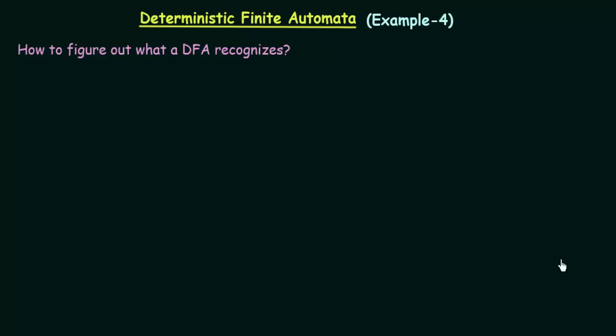Hello everyone. Welcome to the next lecture in Theory of Computation. In this lecture we will be seeing another example of how to figure out what a DFA recognizes. In the previous examples we learned how to design particular DFAs, and in this lecture we will be seeing — given a DFA — how to figure out what it recognizes. Let's get started.